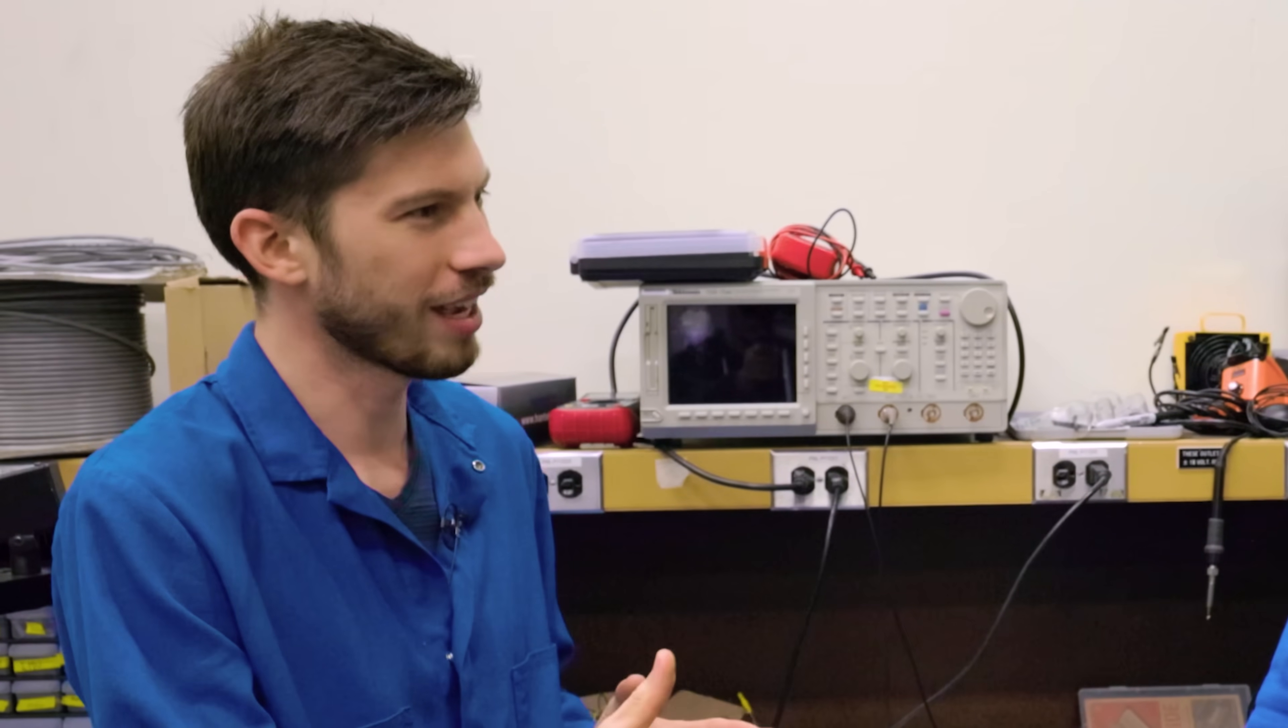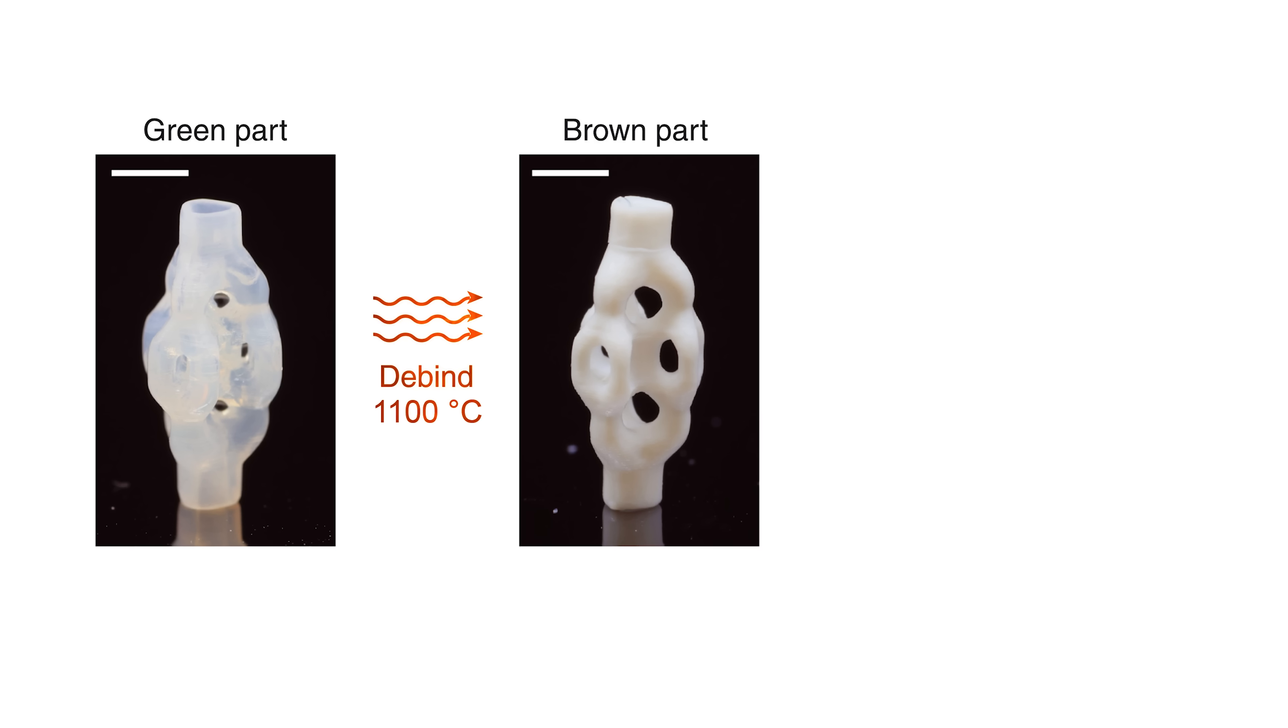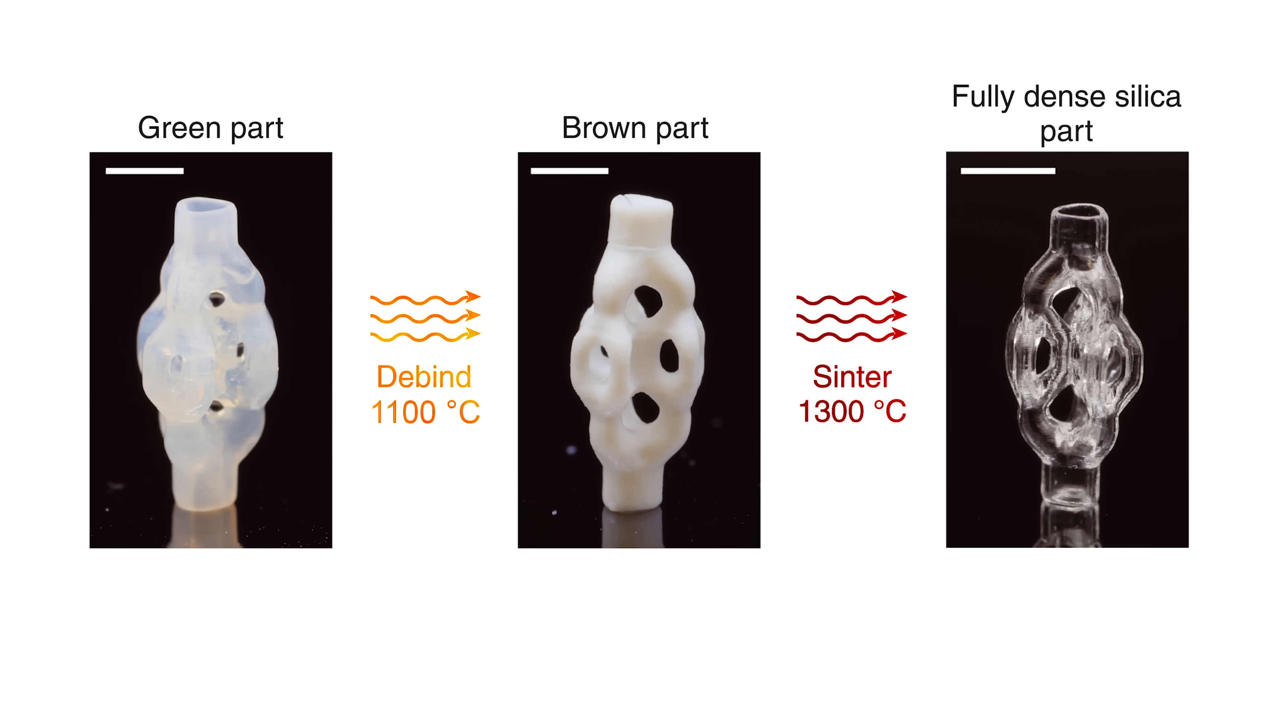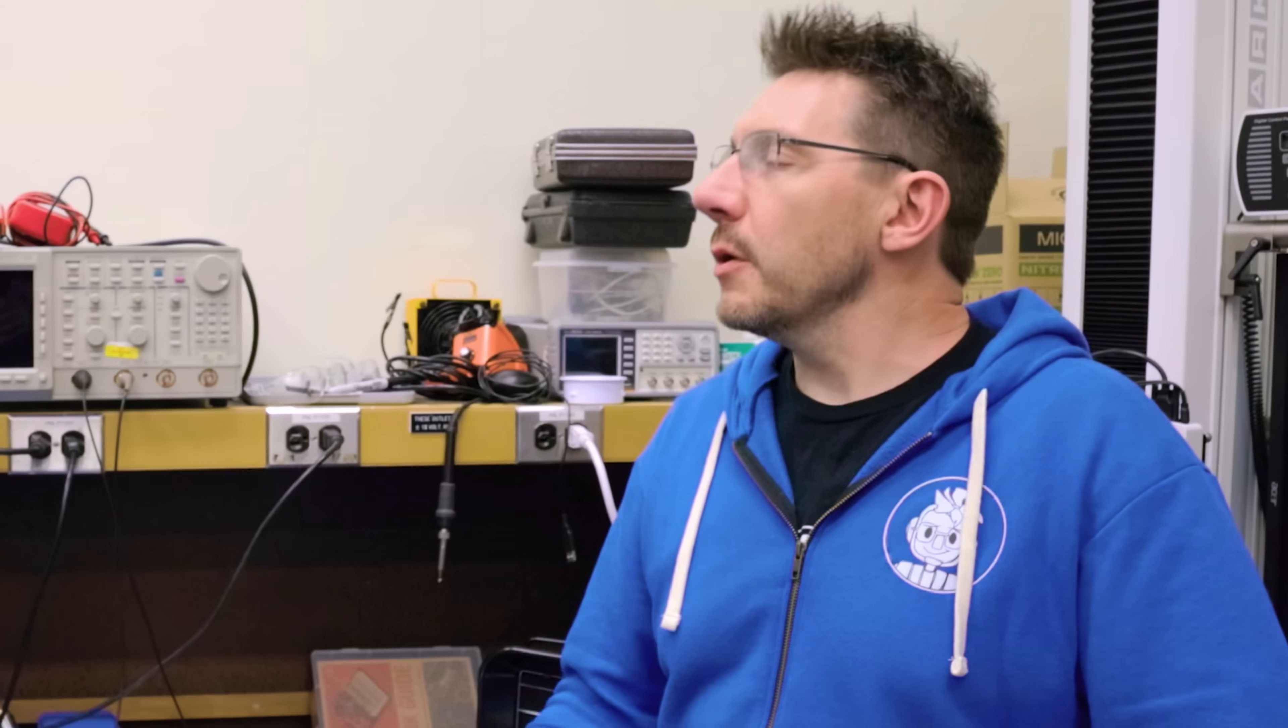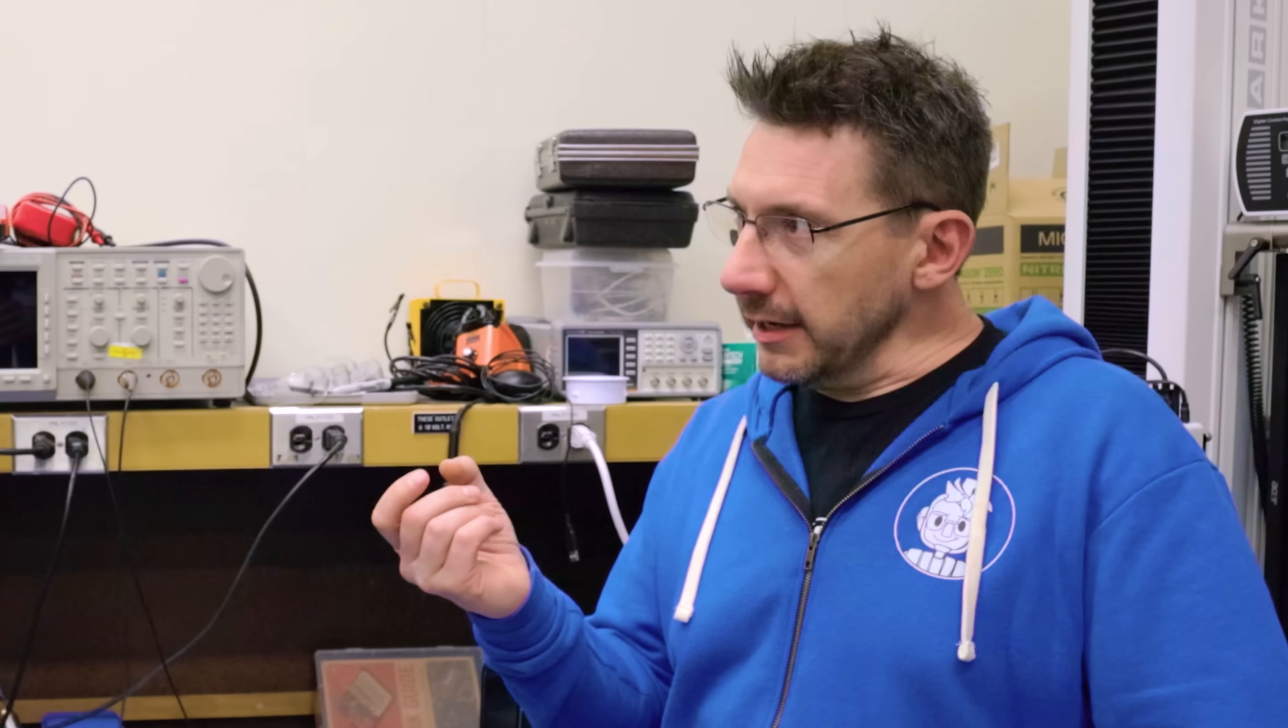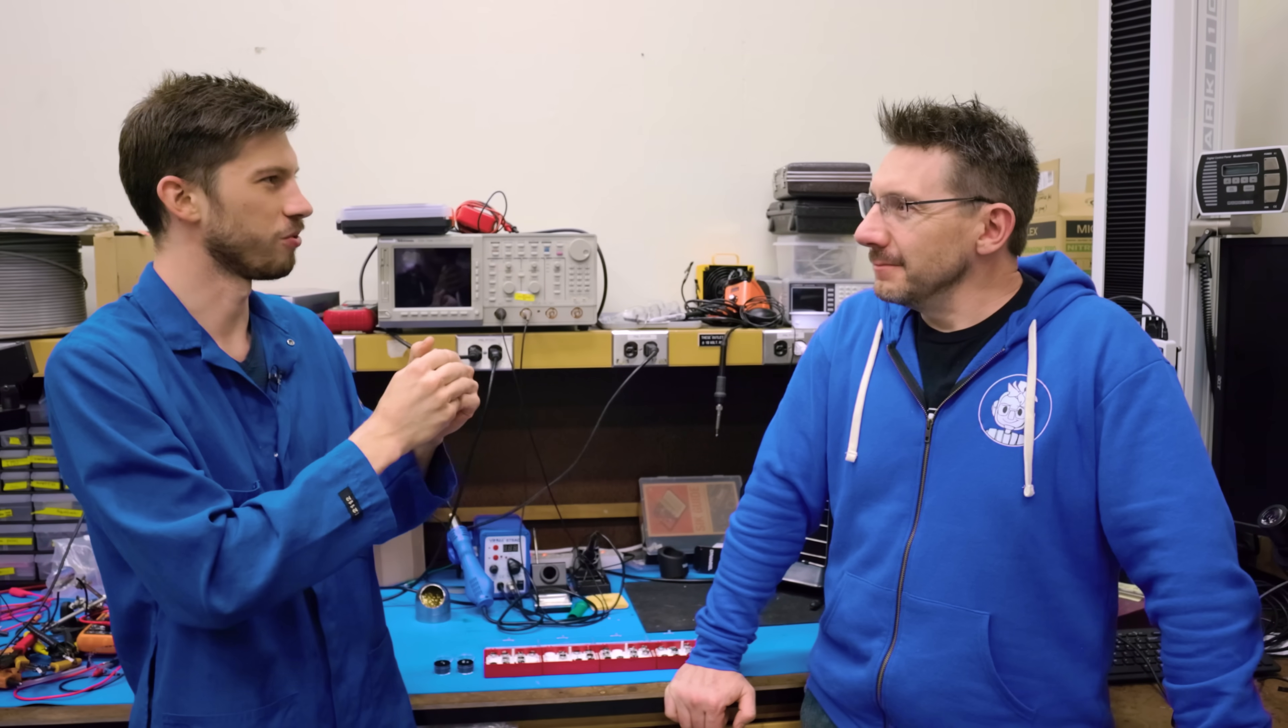And then the next step after that is to sinter it. So then we go up a little higher temperature and we're actually almost melting the silica and it's fusing together. Almost. So softening and it fuses together the particles into a continuous structure of silica.